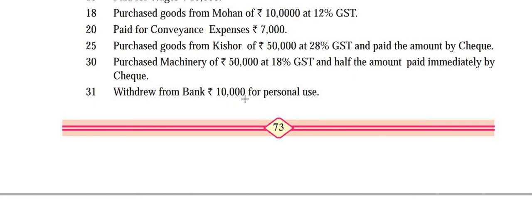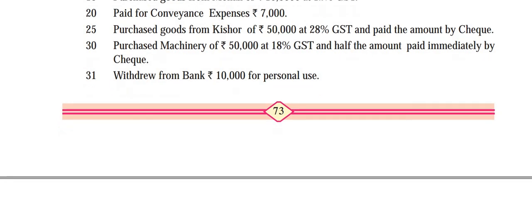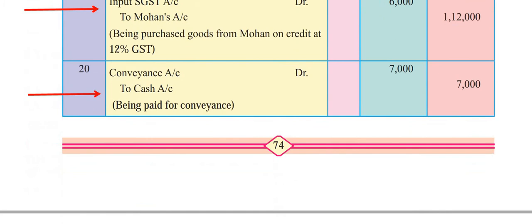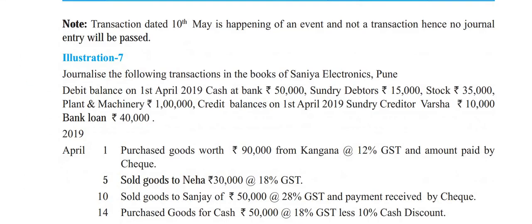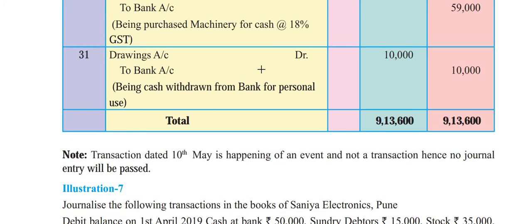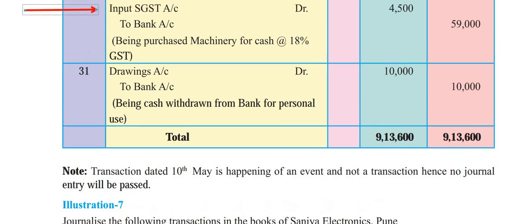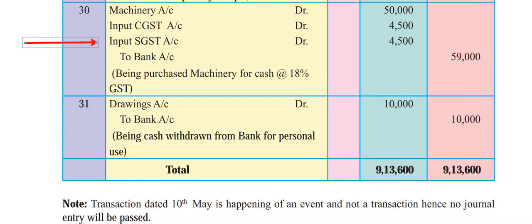The last transaction: withdrew from bank Rs. 10,000 for personal use. Entry: drawings account debit Rs. 10,000, to bank account credit Rs. 10,000. Narration: being cash withdrawn from bank for personal use. Note: the earlier transaction of placing an order is not journalized as it was not an actual transaction.